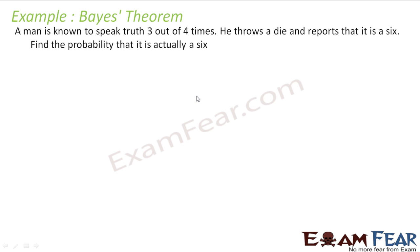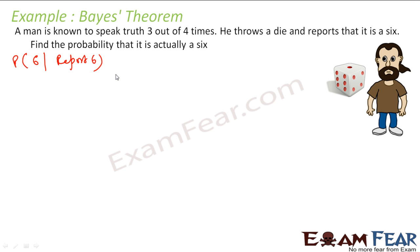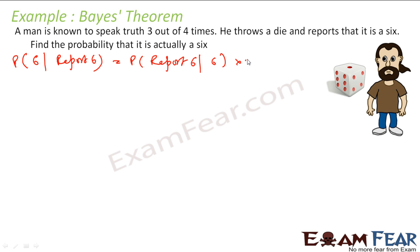A man is known to speak the truth 3/4 of the time. He throws a die and reports it is 6. Find the probability it is actually 6. So here we have to find the probability that it is 6 given that this guy reports 6. We will just use the formula first: P(report 6 | it is 6) × P(6) / P(report 6).